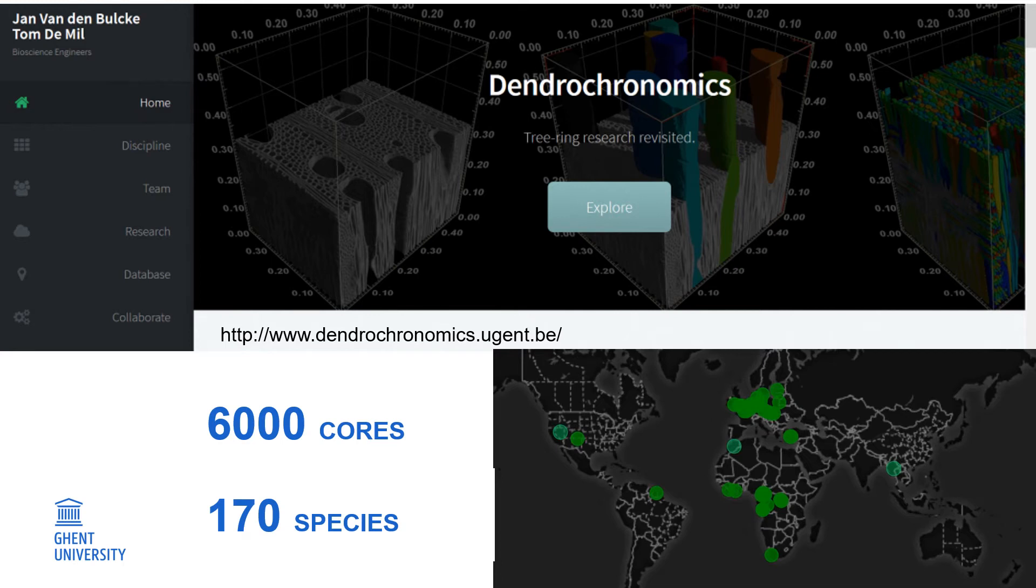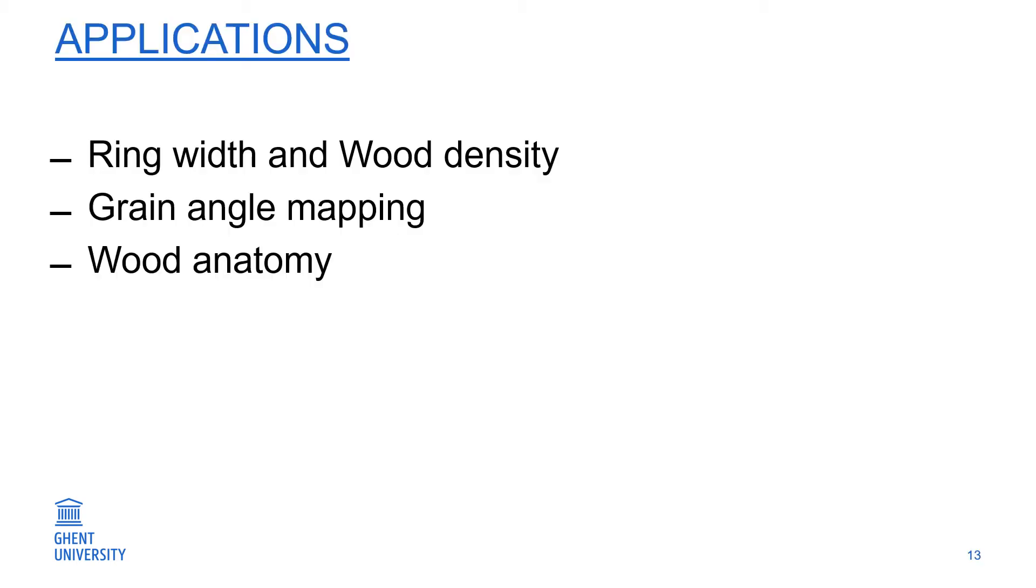Now why is this so innovative? Well, it allows you to map ring width and wood density at the same time, taking into account the grain angle, which I already let you see with the bristlecone pines where the grain angle is really shifting a lot.